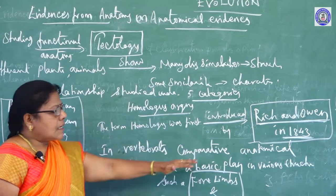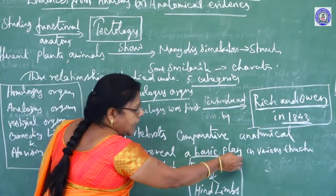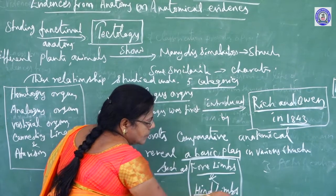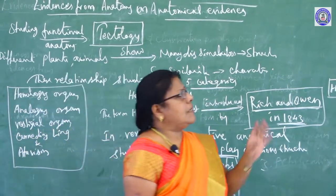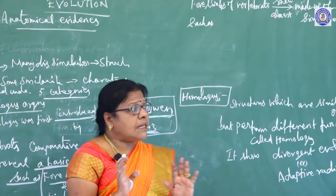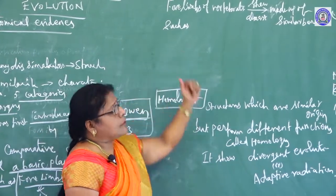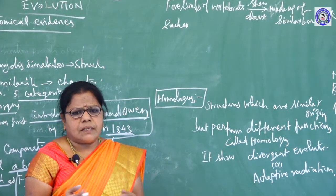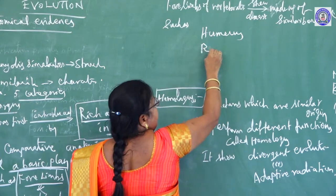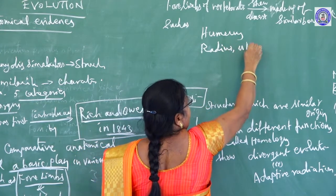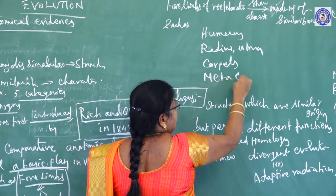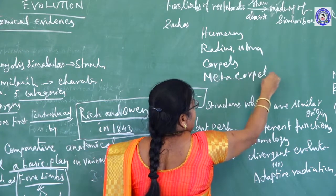In vertebrates, comparative anatomical studies reveal a basic plan in various structures such as forelimbs and hindlimbs. The four limbs of all vertebrates show almost similar bones such as humerus, radius and ulna, carpals, metacarpals, and phalanges.